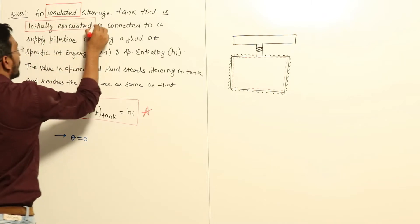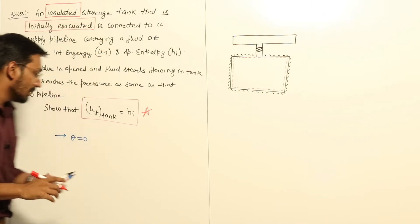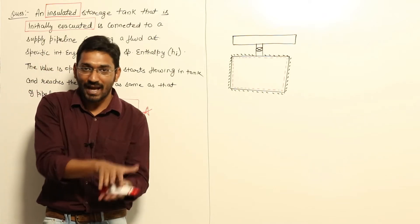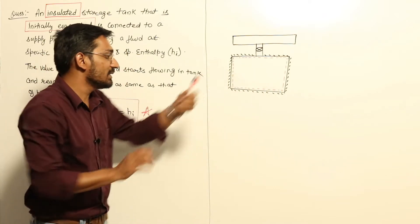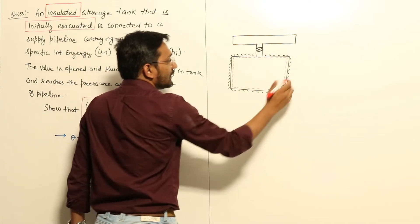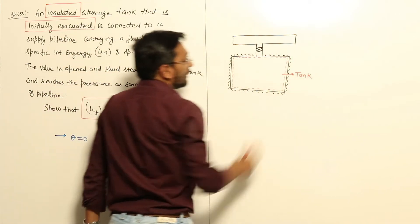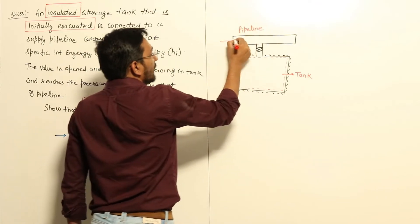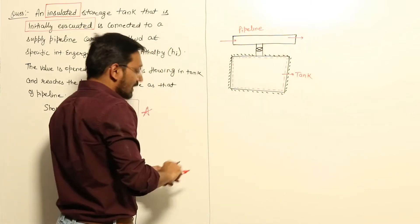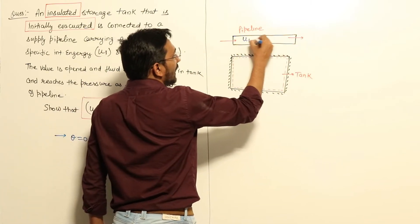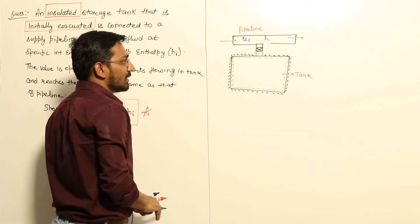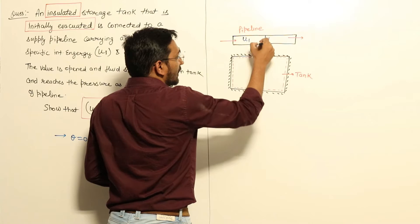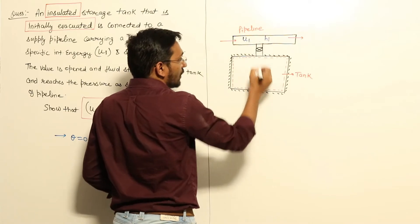The second hint is that the tank is initially evacuated, meaning initially there is no mass in the control volume. The tank is connected to a pipeline through which fluid flows with specific internal energy ui and specific enthalpy hi, as given in the question. There is a valve connecting the pipeline and the storage tank.